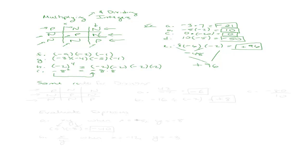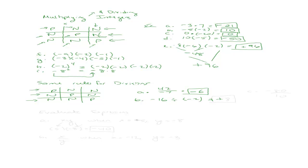The same rules apply for division. I'm going to draw the tic-tac-toe board again: P's all across the diagonal and everything else filled with N's. So a positive divided by a negative is a negative, a negative divided by a positive is a negative, and a negative divided by a negative is a positive. For example, 42 divided by negative 7 — a positive divided by a negative — gives a negative answer: negative 6. And negative 16 divided by negative 2 — a negative divided by a negative — gives a positive answer: positive 8.